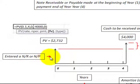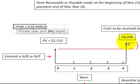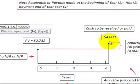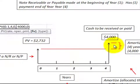We entered either a receivable or a payable here in a note form at the beginning of year one. Then at the end of year four, we either received cash on a note receivable or paid cash on a note payable. So what we're attempting to do is figure out the interest that we either received or paid on that note.